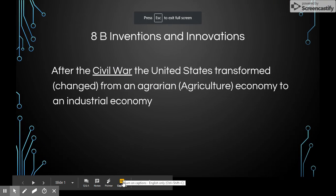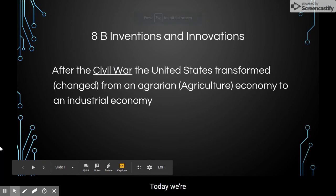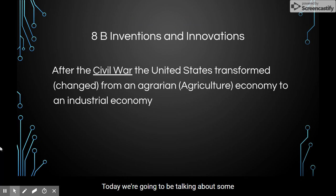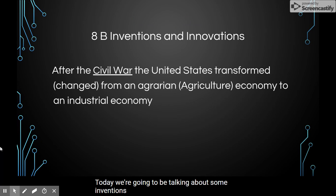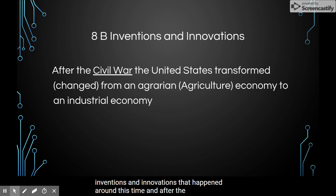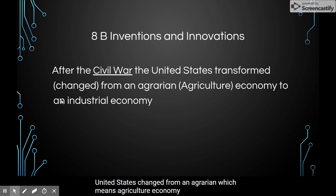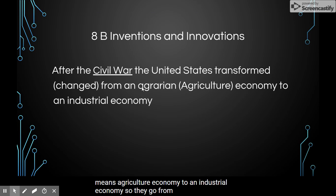Hello, everyone. Today we're going to be talking about some inventions and innovations that happened around this time. After the Civil War, the United States changed from an agrarian — which means agriculture — economy to an industrial economy. So they go from farming to an economy where they're making stuff industrial.